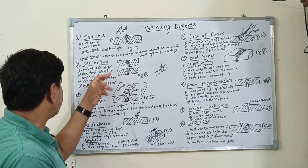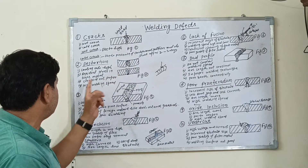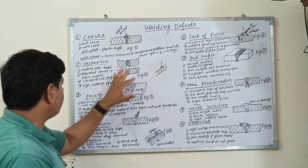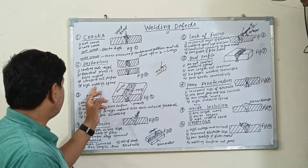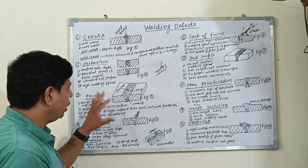The reasons behind distortion include: high cool rate, residual stress in the base metal, clamping not done properly, and high welding speed.